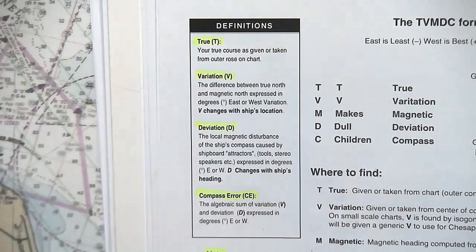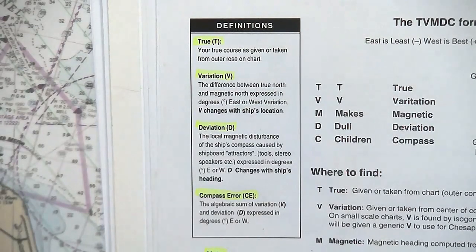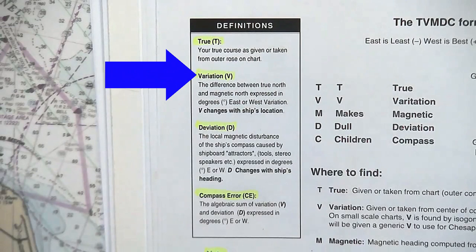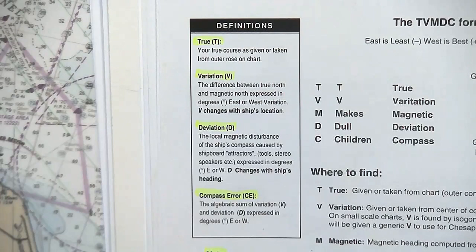Before we begin with the calculations, we first need to describe a couple of items that will show up in the TVMDC formula. The first is variation. Variation is the difference between true north and magnetic north expressed in degrees east or west. For the purposes of this class, we use a variation value of 9 degrees west for all problems.